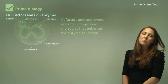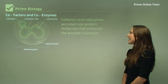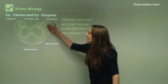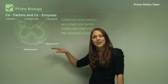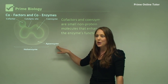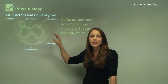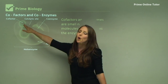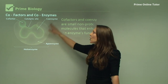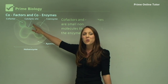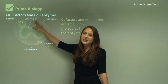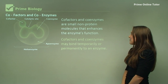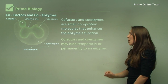Cofactors and coenzymes are small non-protein molecules that enhance the enzyme's function. The enzyme by itself is called the apoenzyme. The whole enzyme together with all of its functional units is called the holoenzyme. We have a cofactor and a coenzyme, and they're both linked at the catalytic site — this is the active site where the substrate will bind. They may bind temporarily or permanently to an enzyme.